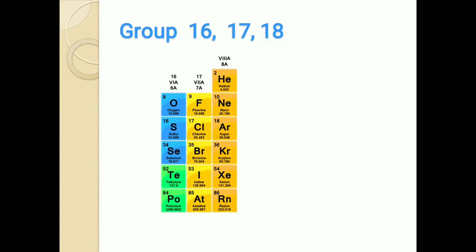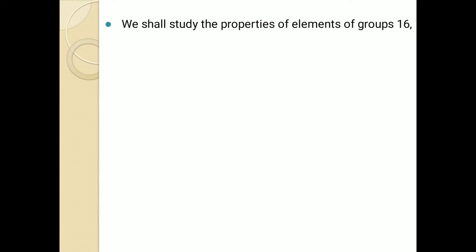These groups are recognized by different names. The 16th group is called the oxygen family, as oxygen is the first member. The 17th group is called halogens, or the fluorine family. The 18th group elements are noble gases. We will study all three groups simultaneously, comparing a single property across all three groups. Let us start with the properties of elements of groups 16, 17, and 18.